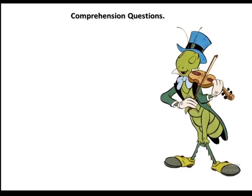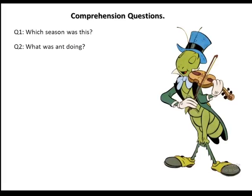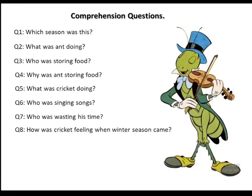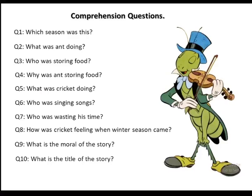Now I'll ask comprehension questions and you will answer. Question 1: Which season was it? Question 2: What was the ant doing? Question 3: Who was storing food? Question 4: Why was the ant storing food? Question 5: What was the cricket doing? Question 6: Who was singing songs? Question 7: Who was wasting his time? Question 8: How was the cricket feeling when winter season came? Question 9: What is the moral of the story? Question 10: What is the title of the story? Question 11: How many characters are in the story?